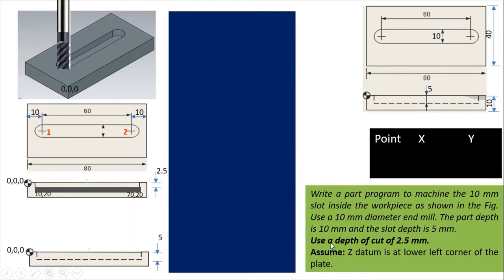One more condition is given: use a depth of cut of 2.5 mm. It means that in one stroke I will not take a depth of 5 mm — only 2.5 mm depth I will take, then again 2.5 mm, so in that way I will achieve a total of 5 mm. Also, assume the Z datum is at the lower left corner of the plate — this is the datum surface of this component.